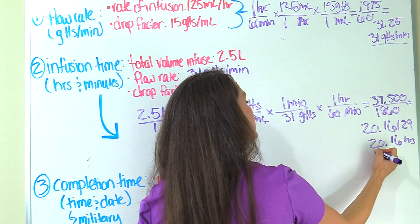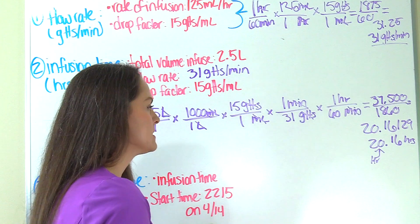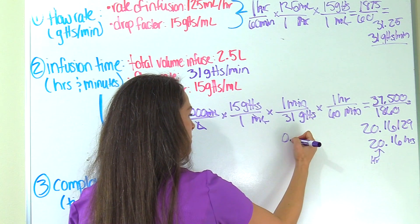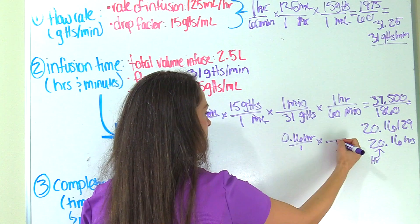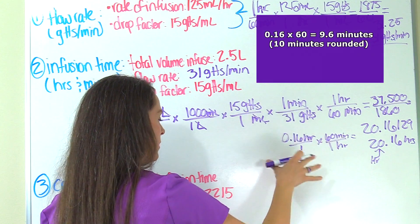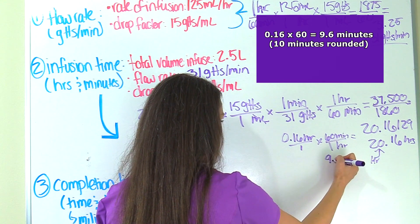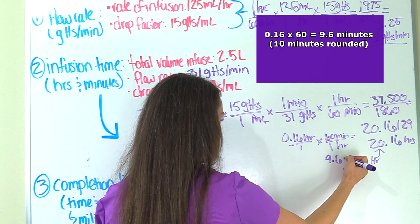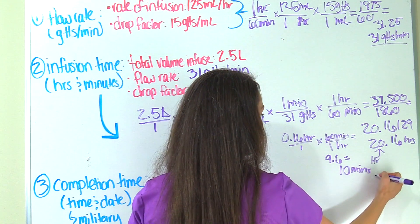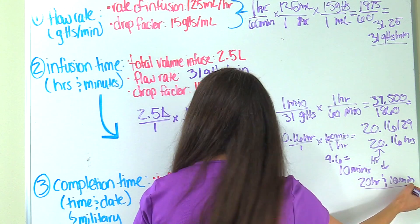So this is in hours — I'm dealing with 20 hours. Now I need the leftover 0.16 hours converted into minutes. Using dimensional analysis: 0.16 hours times 60 minutes per one hour. When we multiply and divide, we get 9.6, which rounds to the nearest whole number — 10 minutes. So our answer is 20 hours and 10 minutes. That is our infusion time.